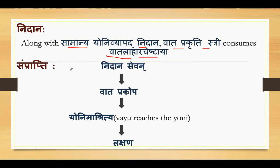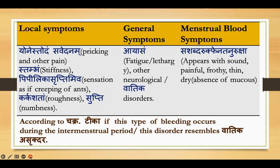Regarding Samprapti: due to these Nidan sevan, Vata becomes prakupita. The vitiated Vayu then reaches the Yoni, i.e., the reproductive tract and organs — 'Yonim ashritya' — and then the symptoms we discussed in three parts develop accordingly.